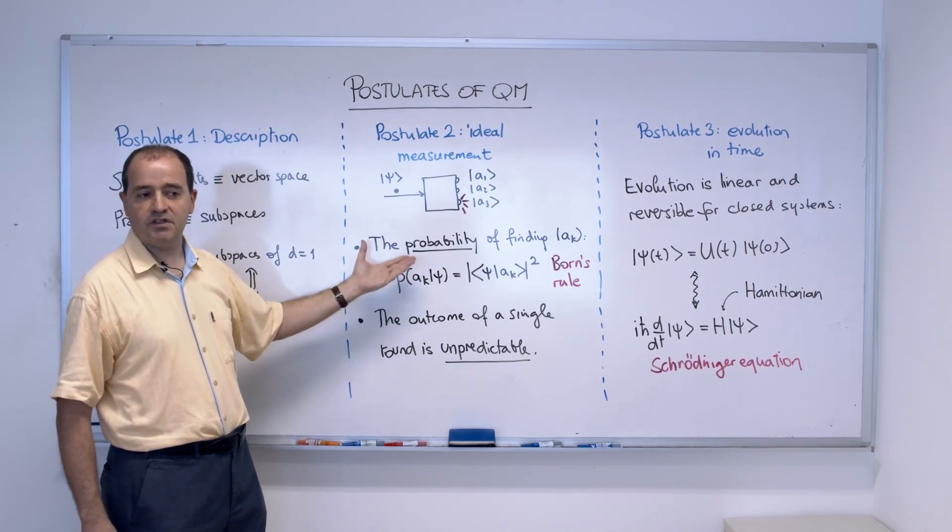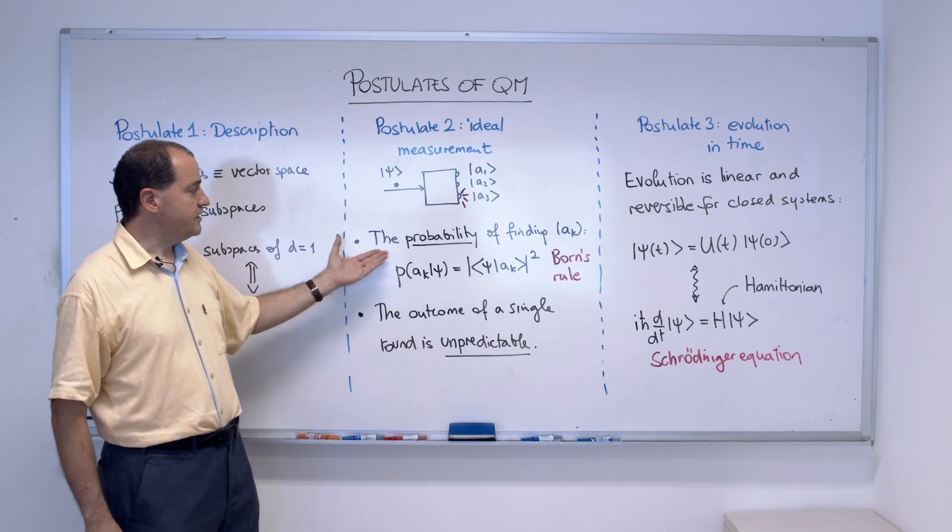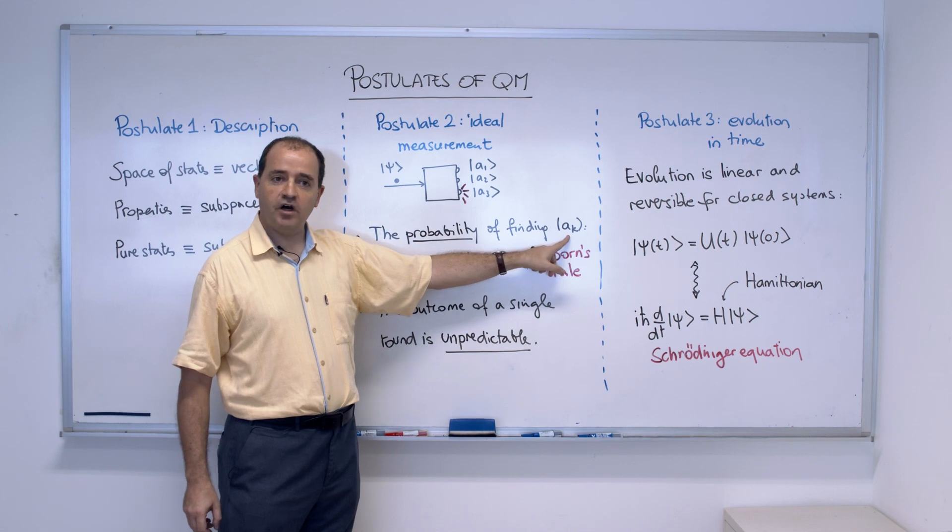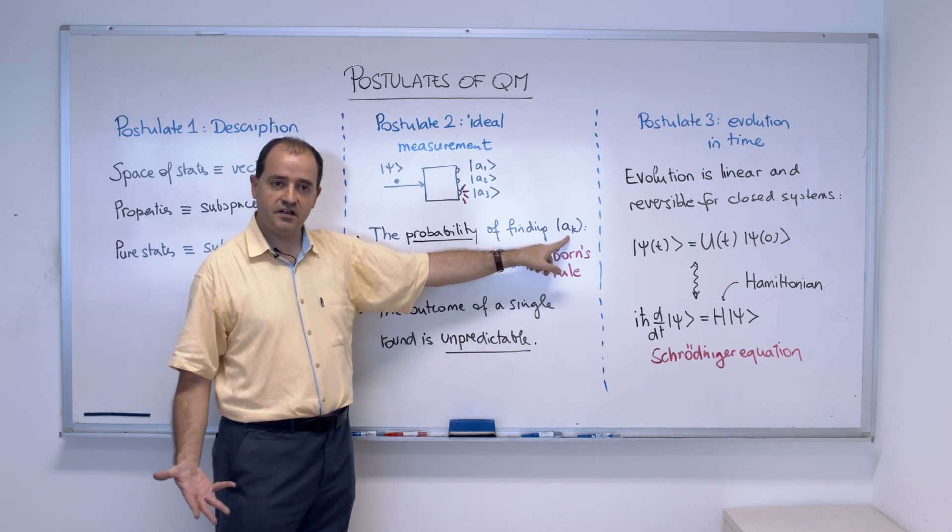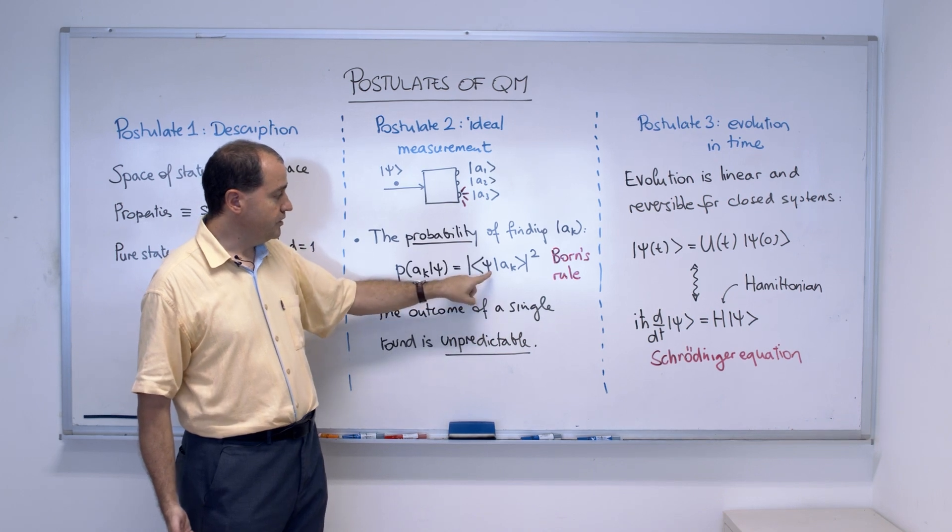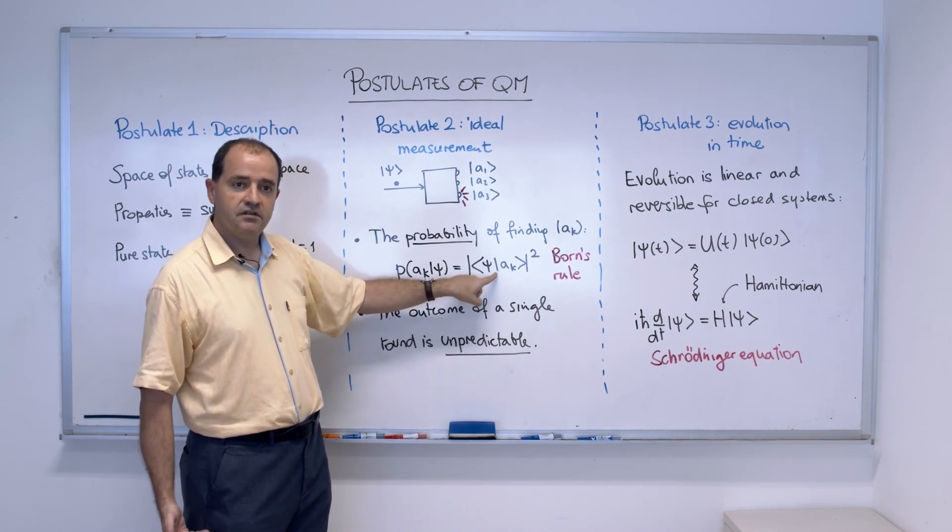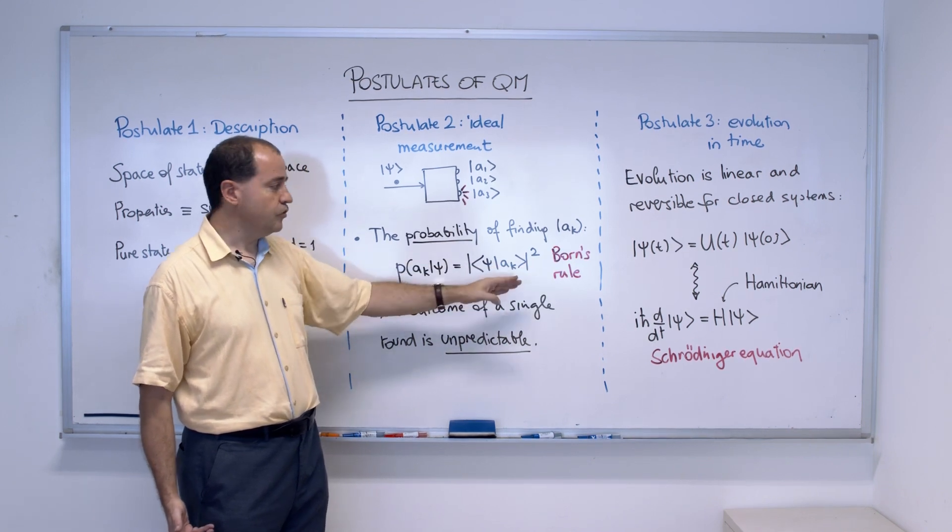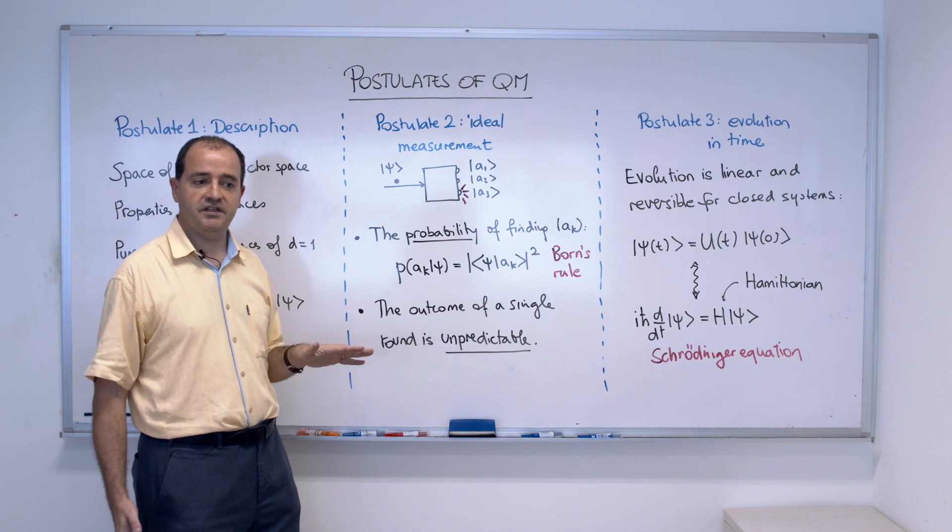Now the rules for the measurements are the following. In fact, this is a theorem, but we use it as a postulate. That the probability of finding the outcome ak for a measurement, the state ak as a result of a measurement, is given by the scalar product between the input state and that state squared, absolute value. This is called Born's rule and will be used all the time. It's probably the core rule of quantum theory.